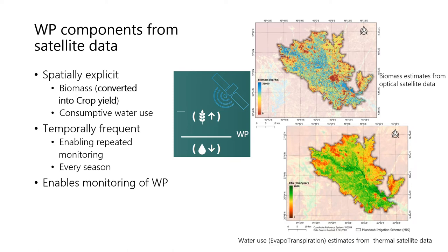The key point here is that remote sensing can be used to estimate both biomass and consumptive water use, which are spatially explicit — meaning it gives spatial variation over your study area — and also temporally frequent, meaning you can monitor periodically, for example every season. This map shows both biomass in kilogram per hectare and actual evapotranspiration in millimetre per year — total biomass in a year. Both are estimated from satellite data: biomass from optical satellite data and evapotranspiration from thermal satellite data using the SEBAL algorithm.